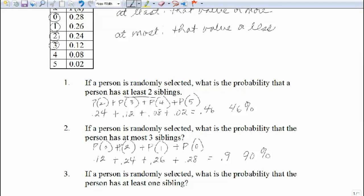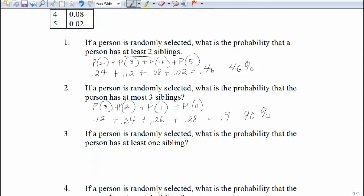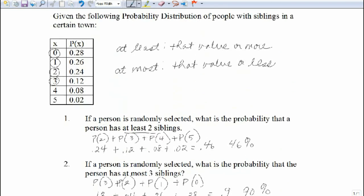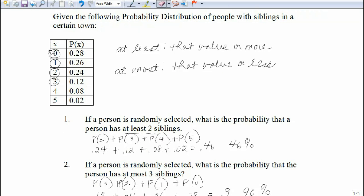So let's go down to our next example. It says if a person is randomly selected, what is the probability that the person has at least one? So let's go back up. Erase what we had before. At least one means that value or more. So we could have one, or two, or three, or four, or five.